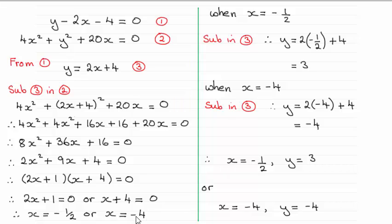So we take each of these values when x is minus a half. I've substituted it into equation 3 here to give me y. Turns out to be 3.